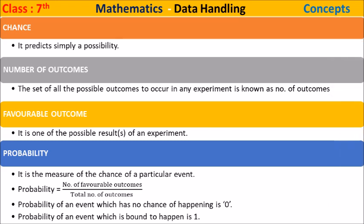Chance predicts simply a possibility. The number of outcomes refers to the set of all possible outcomes that can occur in any experiment.